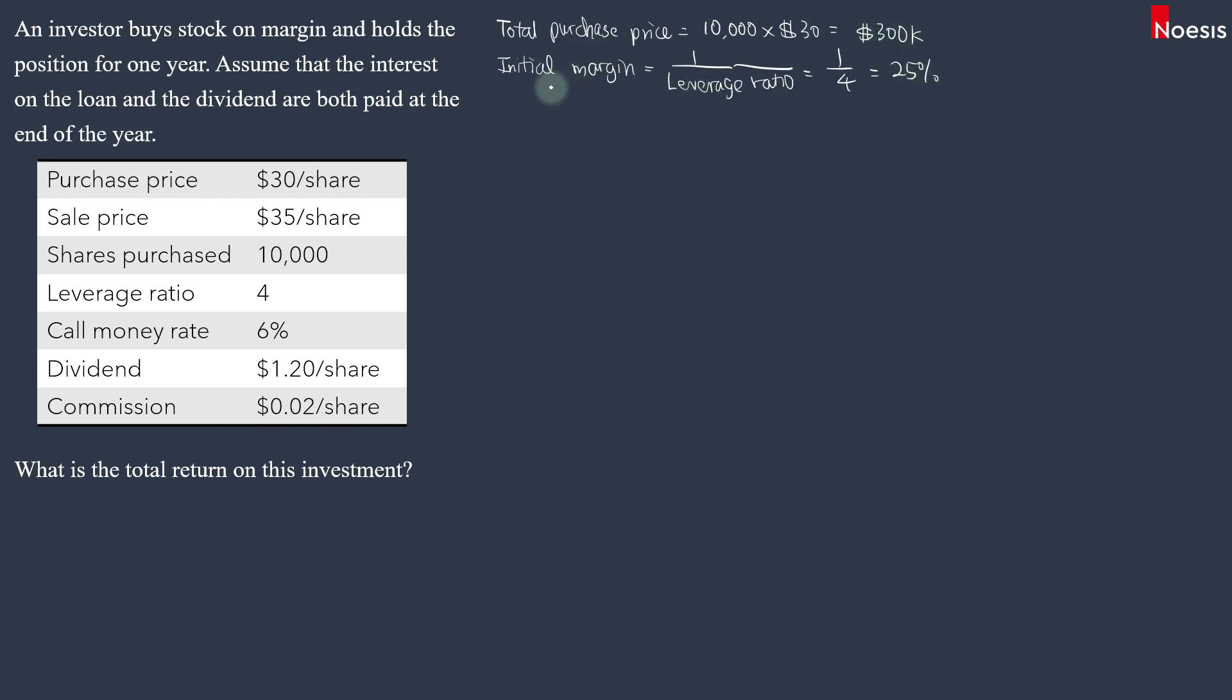In other words, out of this $300,000, 25% will be financed by investor's equity. So we will take 25% times $300,000. That's $75,000. This has to come from the investor's own money. And the rest of it will be on loan.